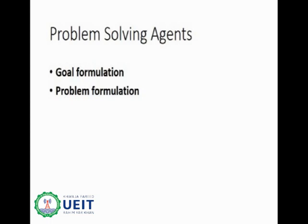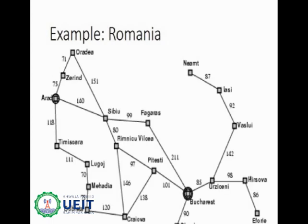The next step is problem formulation. In problem formulation, we decide what actions and states to consider given a goal. For example, for an automated taxi driving from Rahimiyar Khan to Lahore, the goal is to reach Lahore. The initial state would be Rahimiyar Khan, and there would be a sequence of states like Bahawalpur, Multan, Khaniwal, etc. that the agent has to consider. Deciding which cities to take comes under problem formulation. In this and further videos, we use the problem of travelling from one place to another to explain various algorithms.